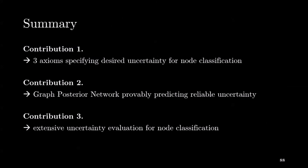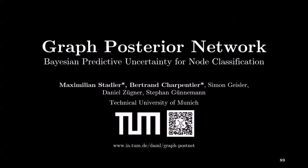To summarize, our work focuses on uncertainty estimation for node classification. We propose three axioms specifying the desired behavior of the uncertainty estimates, a new model called graph posterior network for provably reliable uncertainty estimation, and perform extensive evaluation using OOD node detection and shift against feature and edge perturbations. We hope that you will check out the full paper on graph posterior network. This was joint work with Simon Geisler, Daniel Zugner, and Stefan Gunneman from the Technical University of Munich.